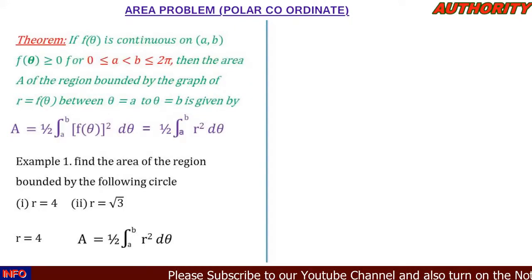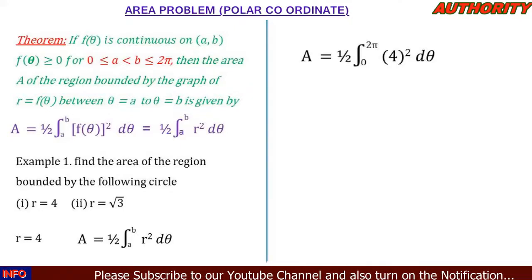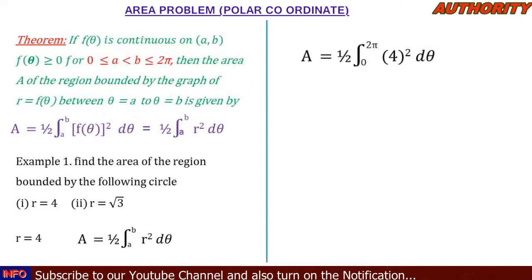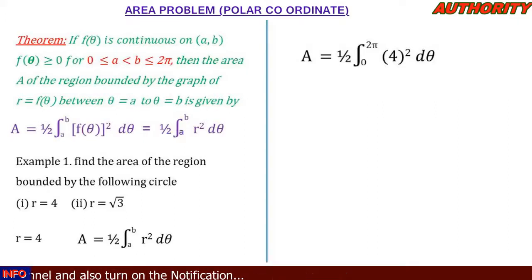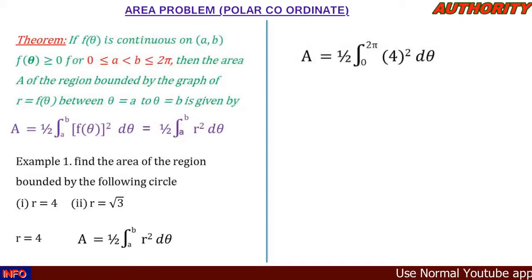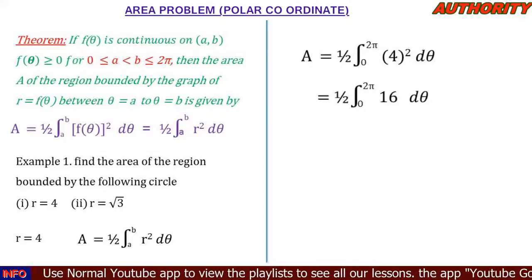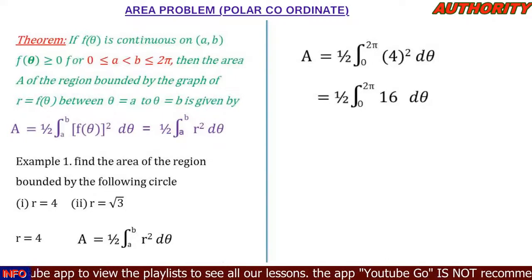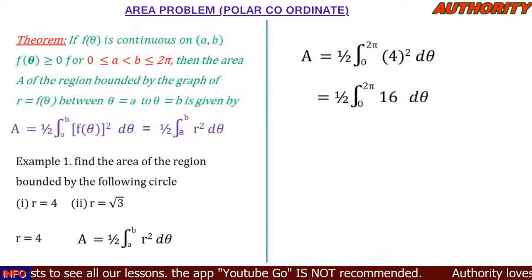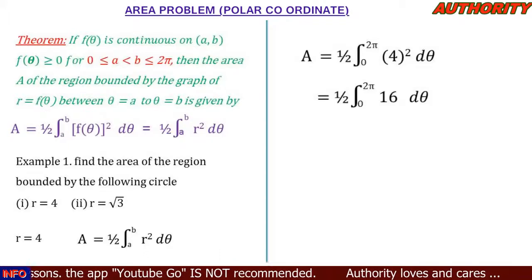We have r equal to 4. From the theorem, a and b are in the interval 0 to 2pi, so the boundaries we are going to use are from 0 to 2pi. So the area is equal to one-half times the integral from 0 to 2pi of 4 squared d-theta. Now, 4 squared is 4 times 4, which is 16, so we have one-half times the integral from 0 to 2pi of 16 d-theta.